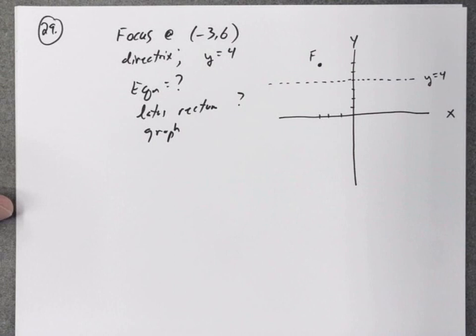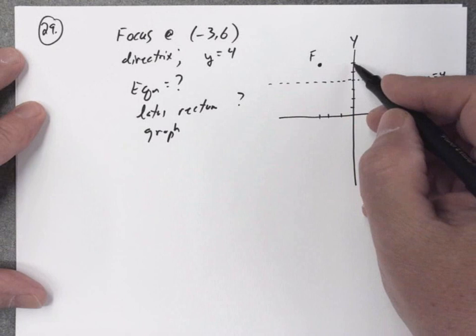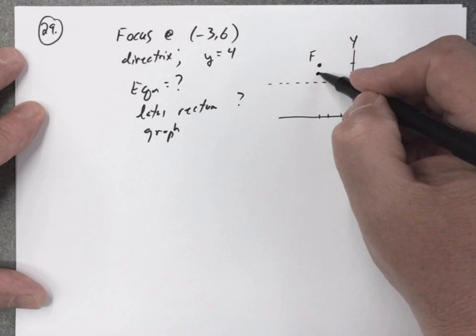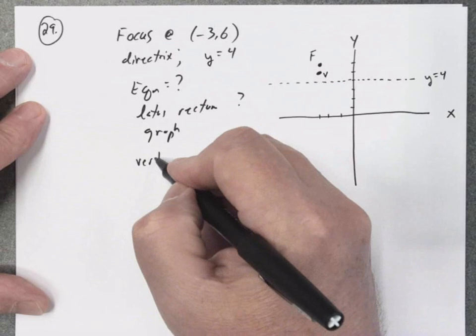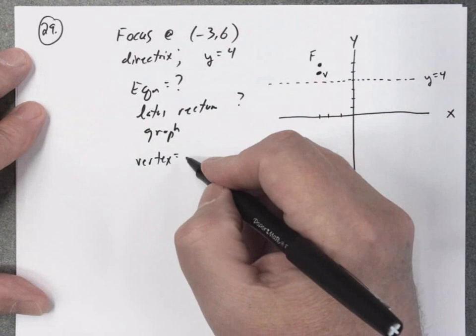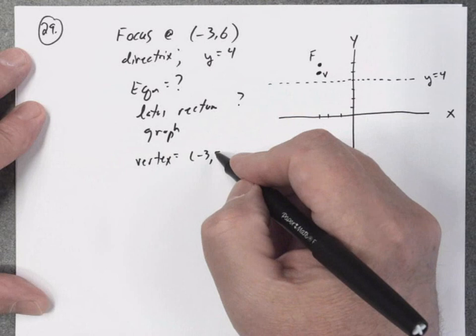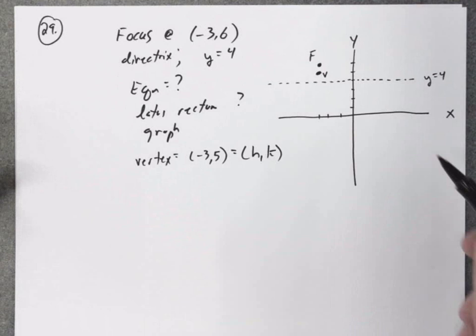Now we know that our parabola, the vertex of the parabola is halfway between the focus and the directrix. So if the focus is here with y equals 6, the directrix is y equals 4, we actually know the vertex is therefore going to be (-3, 5), which in a minute is going to give us our h and k.